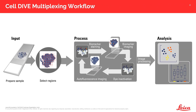So how does Cell Dive actually work? Put simply, Cell Dive is an iterative staining process that uses a gentle dye inactivation solution to repeatedly stain and de-stain a single piece of tissue. And it achieves this using custom study management software, onboard automated imaging and image corrections, and an open platform that allows the system to work within your lab's needs.